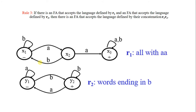Let's start with a simple example. We have two FAs: FA1 accepts a string with double letters and accepts the string ending in b. We have to draw an FA for r1 r2, concatenating them so that where the string of the first FA ends, the string of the next FA starts.